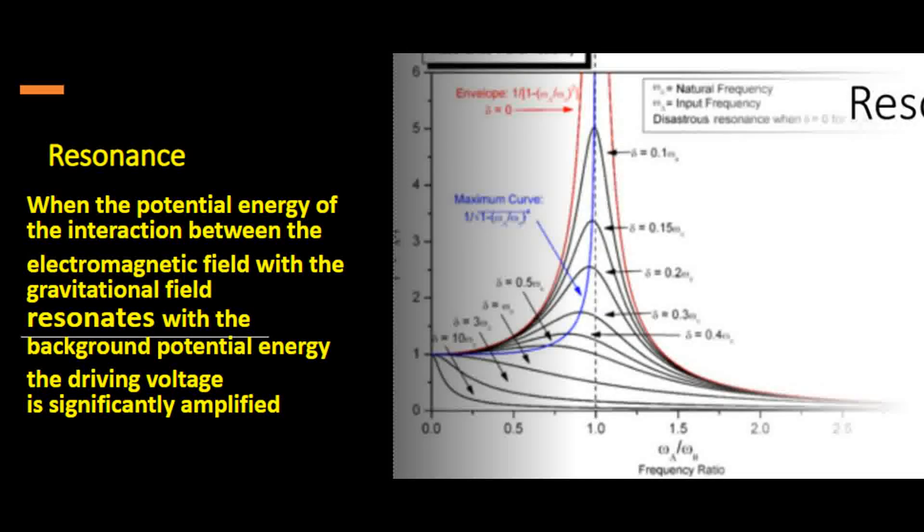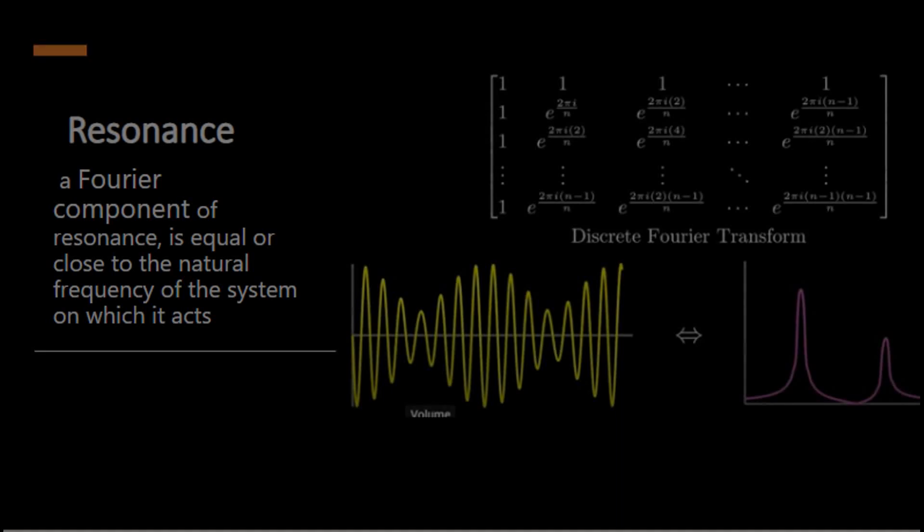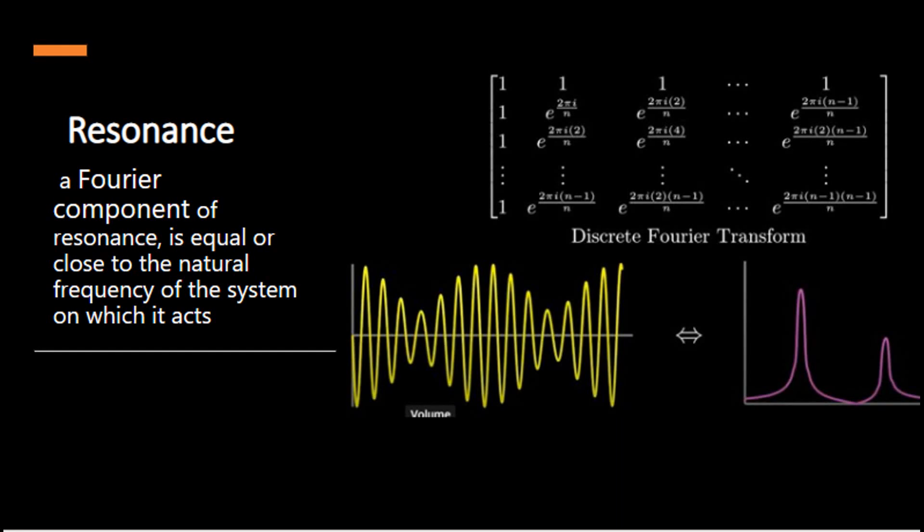When the potential energy of the interaction between the electromagnetic field with the gravitational field resonates with the background potential energy, the driving voltage is significantly amplified. A Fourier component of resonance is equal or close to the natural frequency of the system on which it acts.